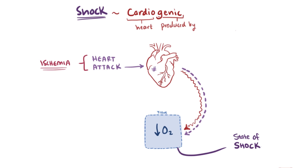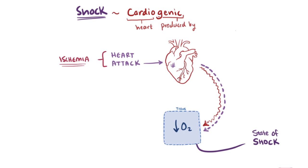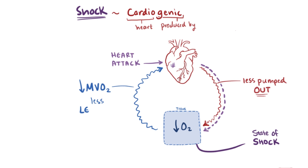When the heart's muscle cells die, it can't contract as hard, so stroke volume goes down and therefore cardiac output goes down as well. As with hypovolemic shock, the body releases vasoconstrictors to increase vascular resistance and help maintain blood pressure. MVO2 will also be down since less oxygen is being pumped out, so less will be left over.